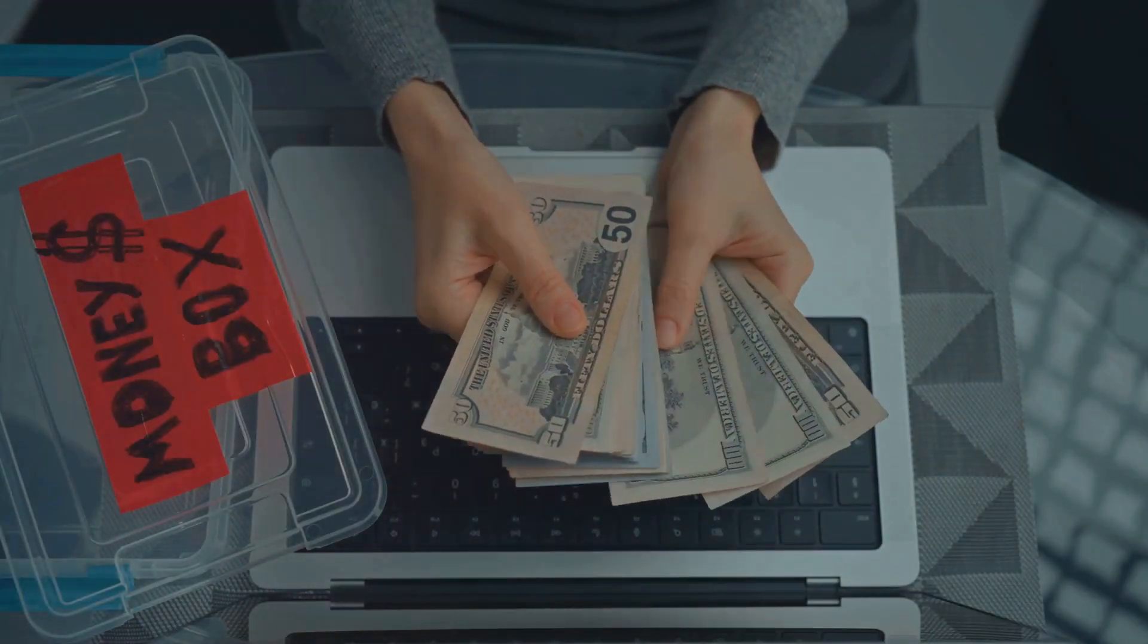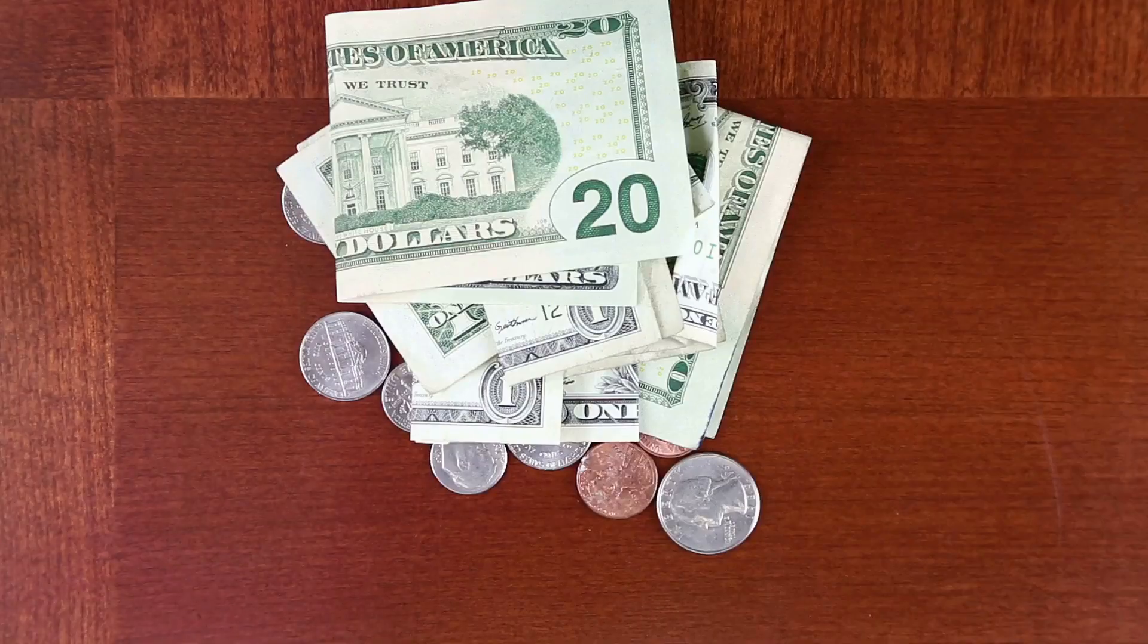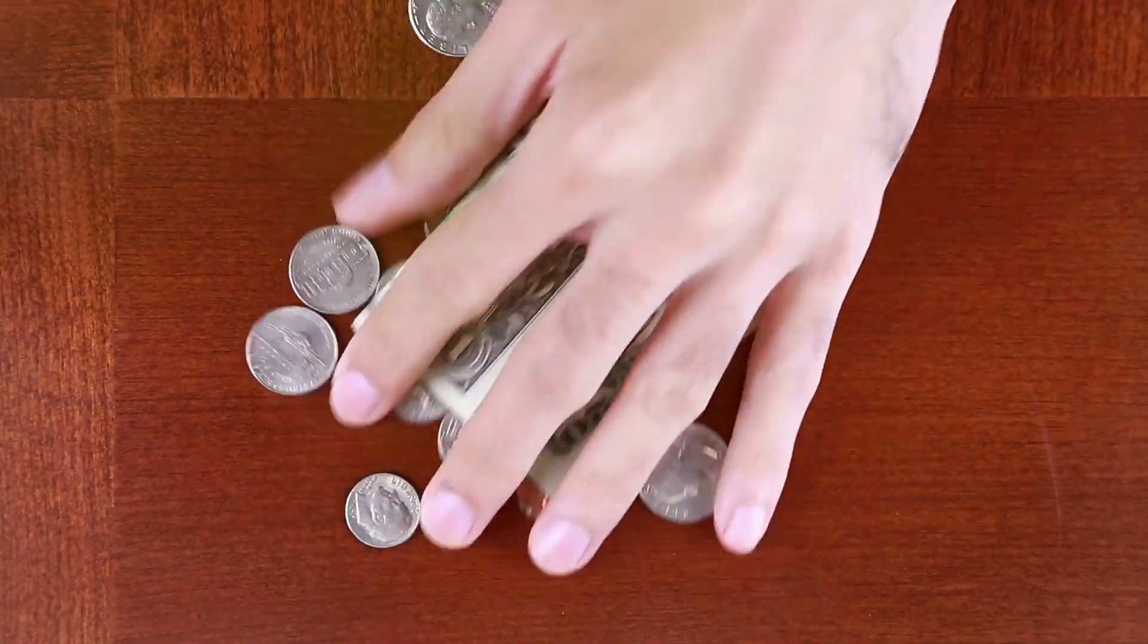From there, categorize your expenses into needs, wants, and savings. Prioritize your needs first, then allocate what's left for your wants and savings.